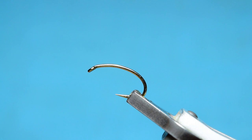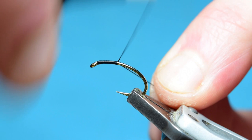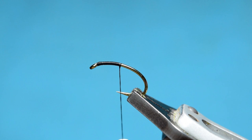I'm going to start the thread behind the eye, if I actually bother to tighten the hook in the vise first. Hook behind the eye, I'm just going to wind this thread about halfway back, grab your scissors, just trim off the excess.